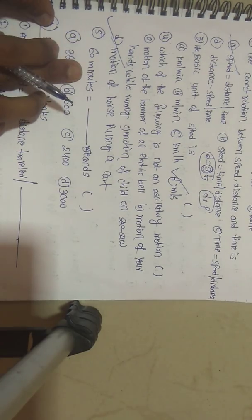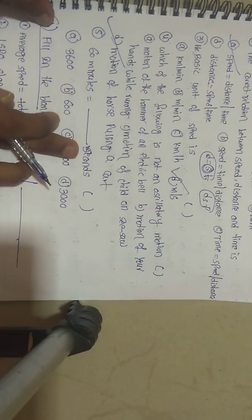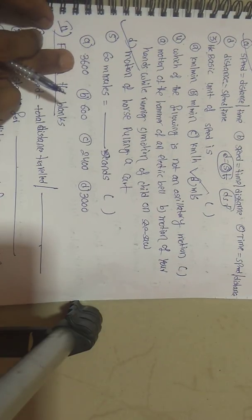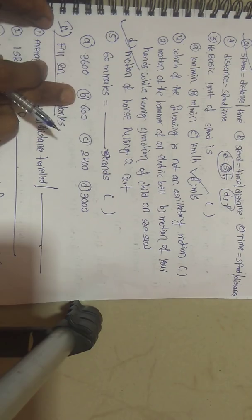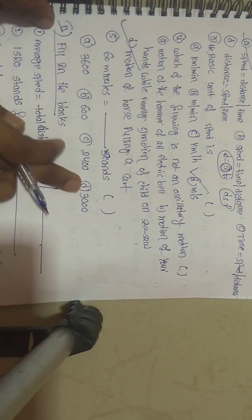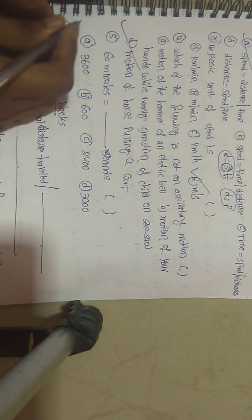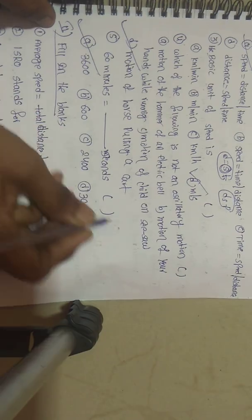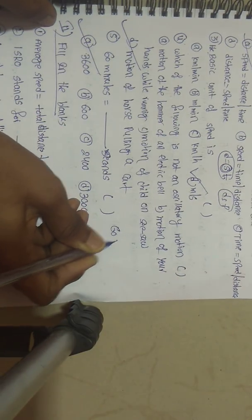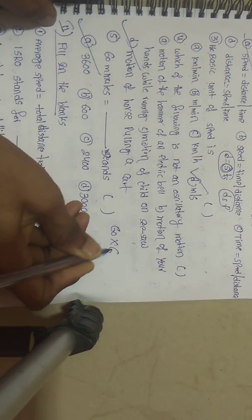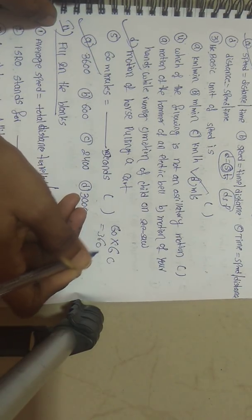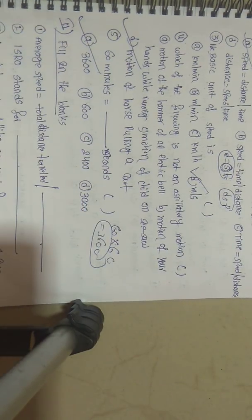Fifth question: 60 minutes equals how many seconds? Option A: 3600, Option B: 600, Option C: 2400, Option D: 3000. The answer is Option A, 3600. To convert minutes to seconds, multiply by 60, so 60 into 60 equals 3600.